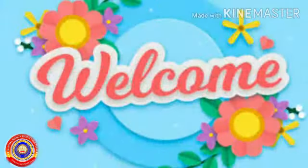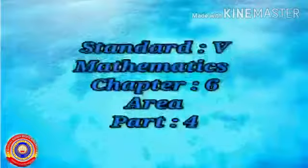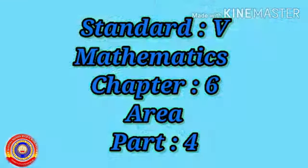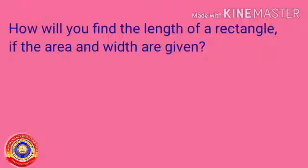Hi children, welcome back to our math class. Hope all of you are doing well. Today we are going to continue the chapter Area. In the previous classes we learned about finding the area of rectangle and square from the specified length and width using the formulas: area of a rectangle is equal to length into width, and area of a square is equal to side into side.